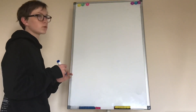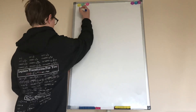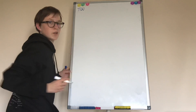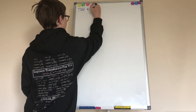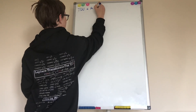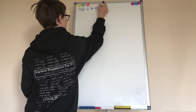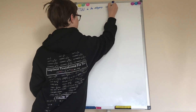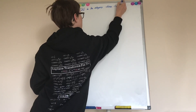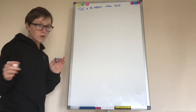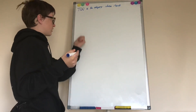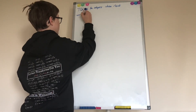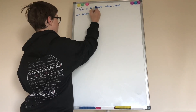First we define the fundamental groupoid of a space X, denoted capital Pi of X. It is the category whose objects are the points of X.